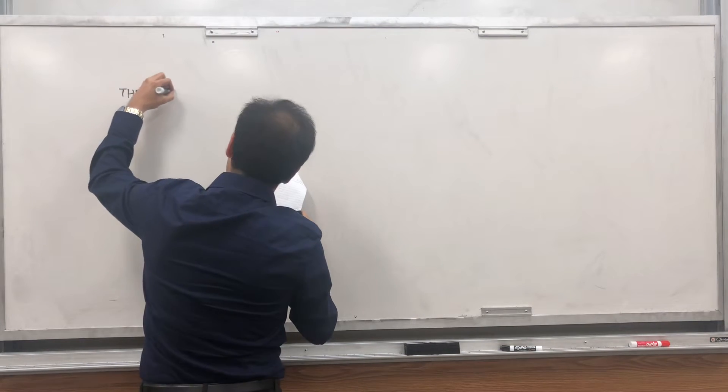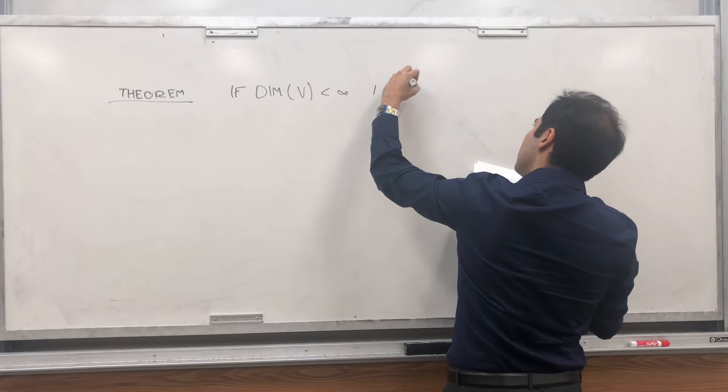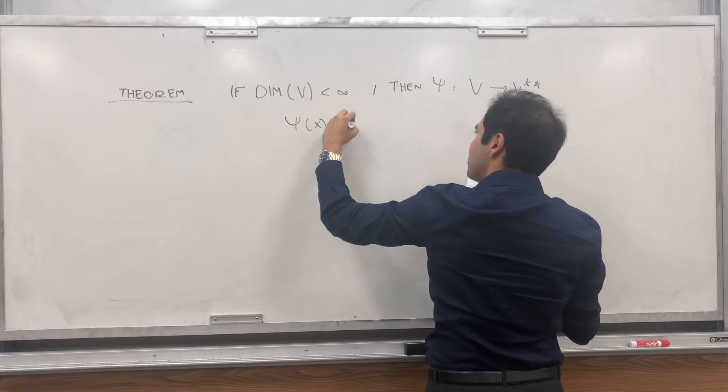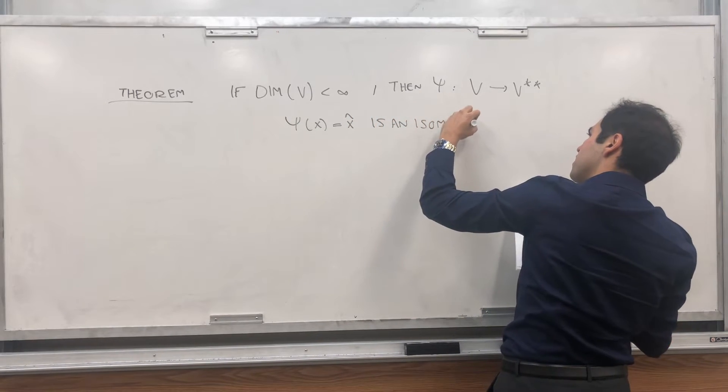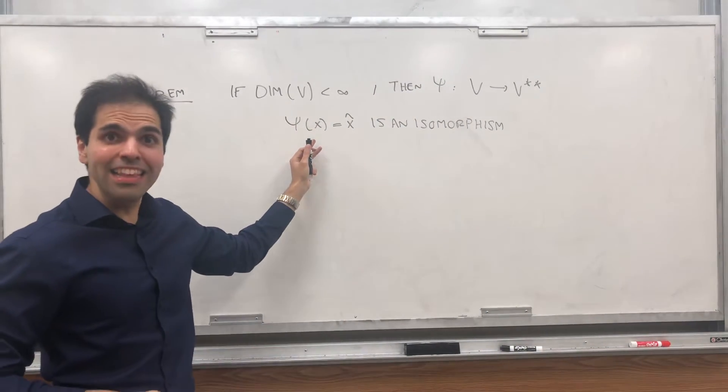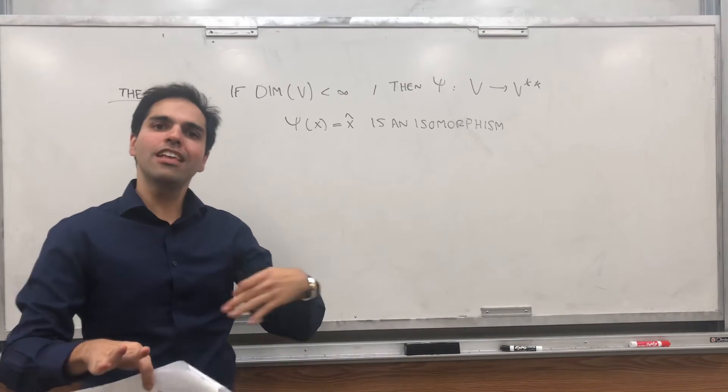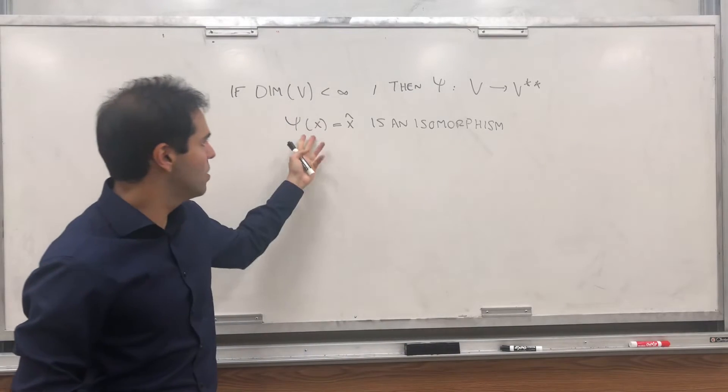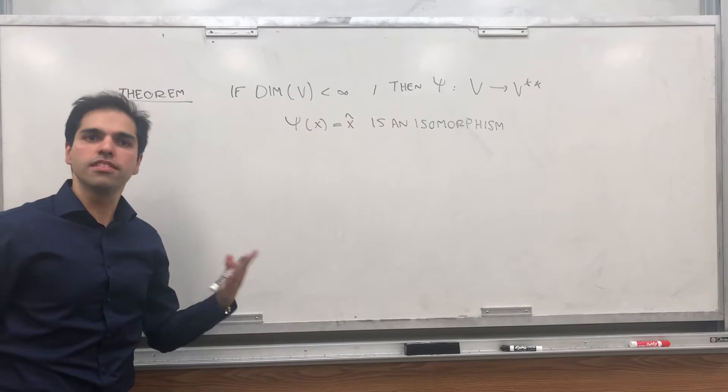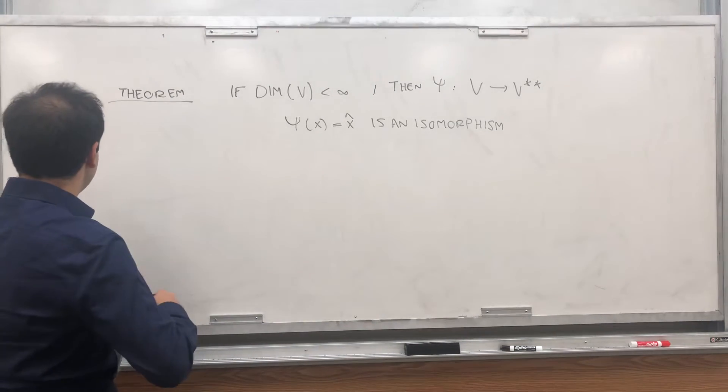So theorem, if, again, infinite dimensions, V is finite, then Psi from V to V double star, defined by Psi of x equals x hat, is an isomorphism. So in other words, V and V double star are always isomorphic, but with this very elegant isomorphism. Why is it elegant? Because notice, this does not require basis at all. To show that V and V star are isomorphic, we needed a basis. But here, no basis required. So that's why it's like a super isomorphism. And by the way, sometimes in infinite dimensions, this could happen. If this is the case, we'll call V reflexive. So it's a very good vector space. Okay, and let me show why it's an isomorphism.